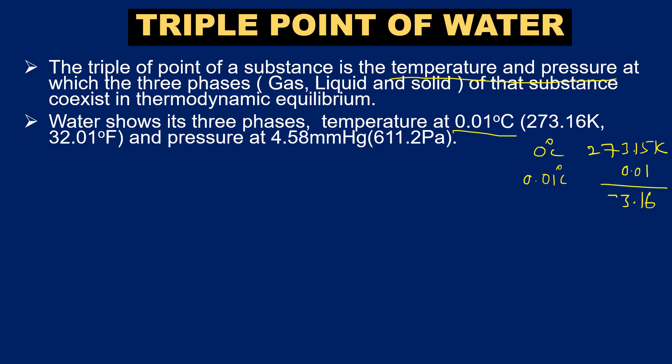The temperature is 0.01 degrees Celsius, which is 273.16 Kelvin. The pressure is 4.58 millimeters of Hg, which equals 611.2 Pascal. So basically, temperature is 0.01 degrees Celsius and pressure is 4.58 mmHg.